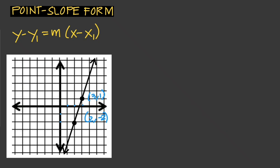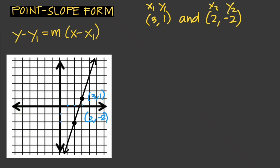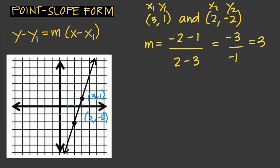For the next problem, on the graph we have two points: (3, 1) and (2, -2). Assigning x₁, y₁, x₂, y₂, the slope is (y₂ - y₁) / (x₂ - x₁) = (-2 - 1) / (2 - 3) = -3 / -1, so our slope equals 3.